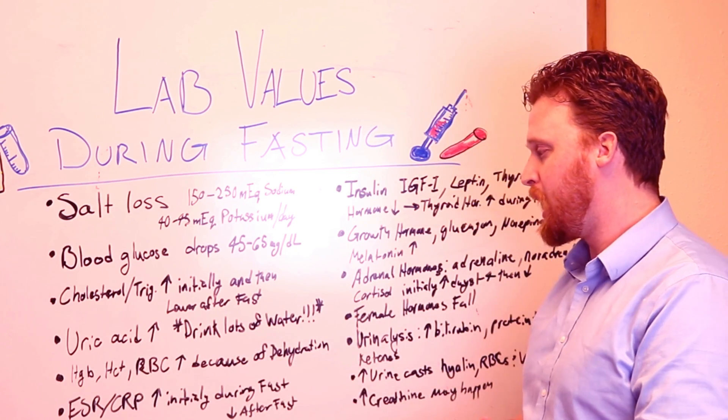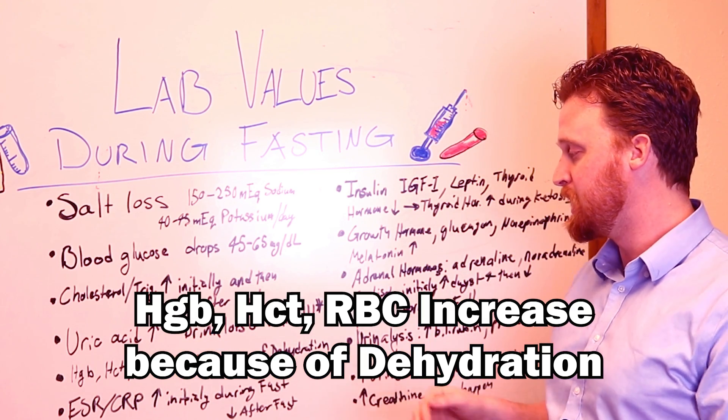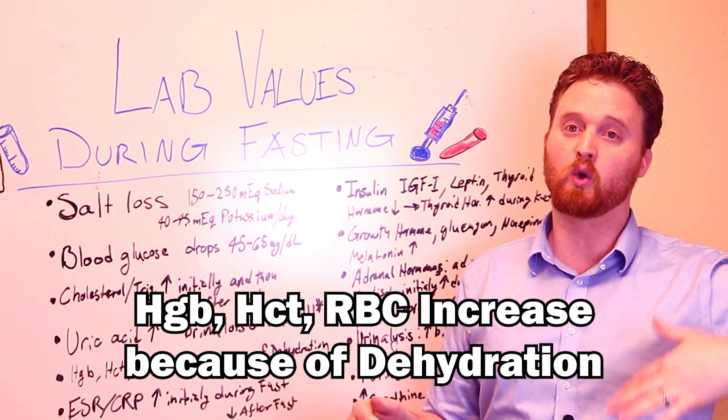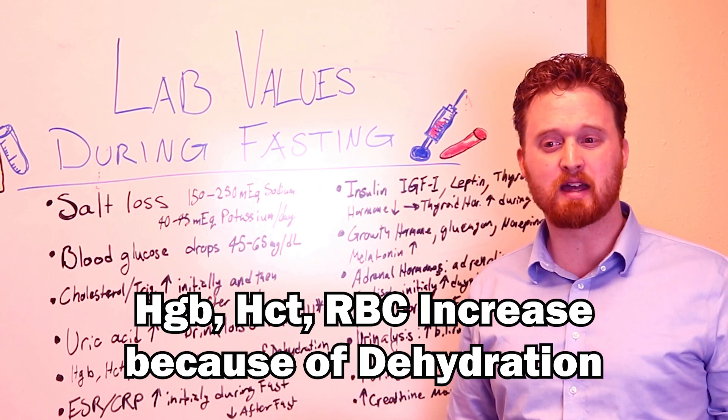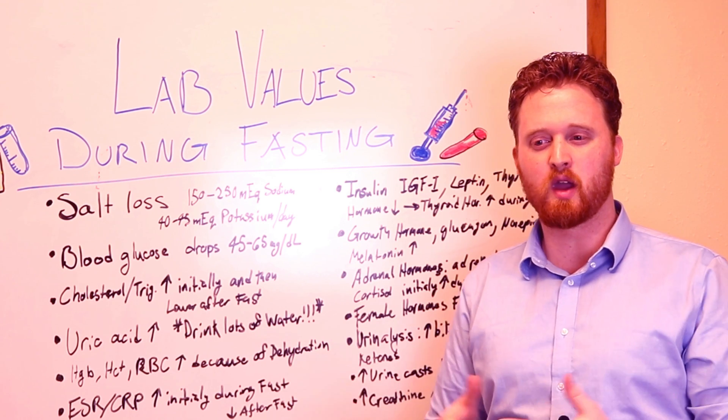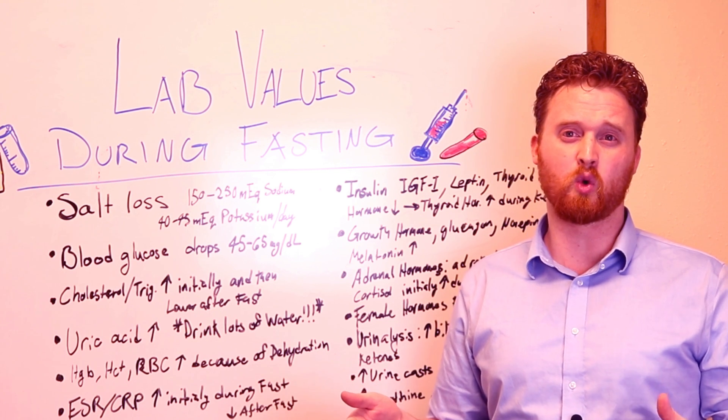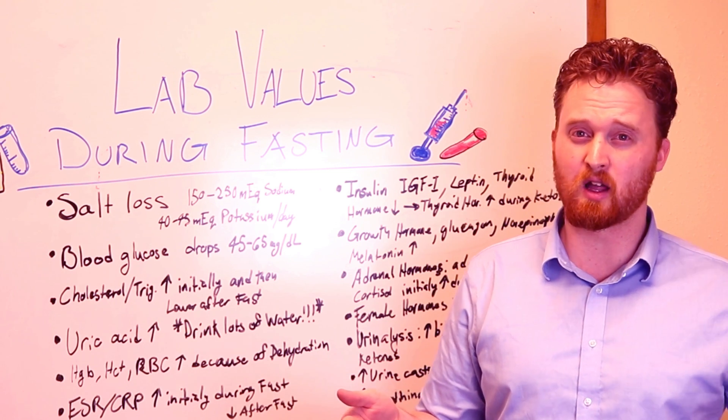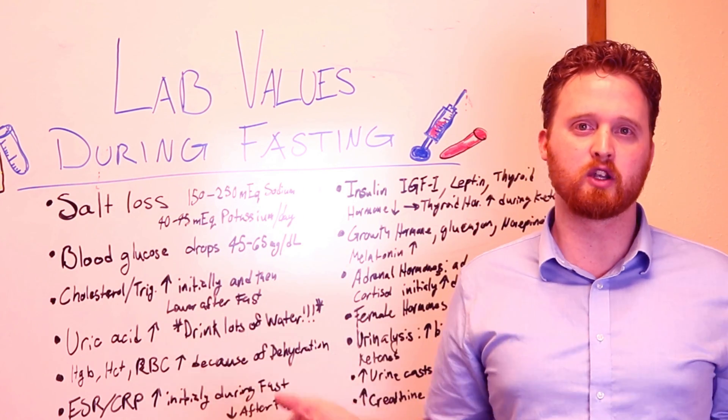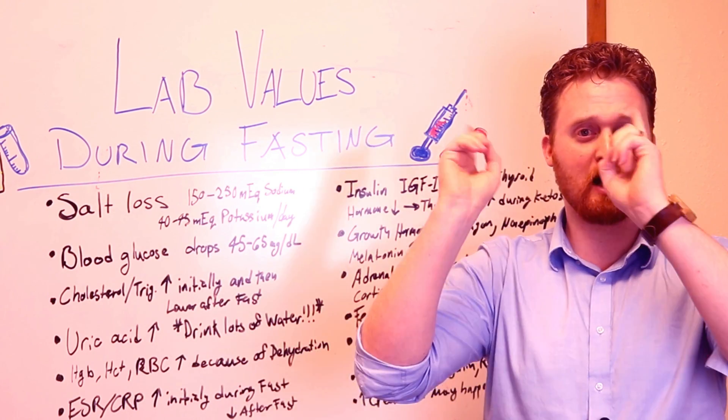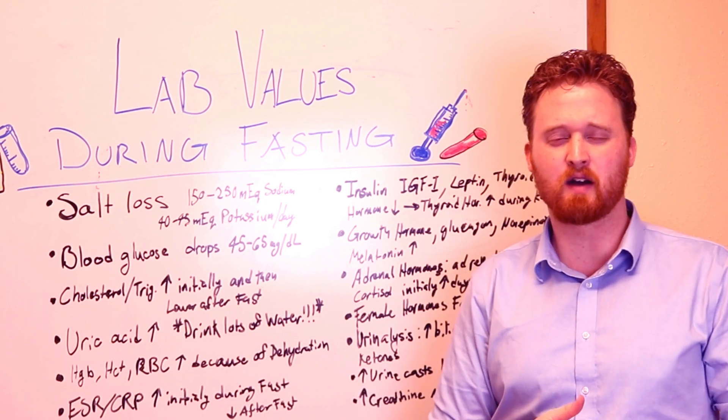The other things that do increase is hemoglobin and hematocrit and red blood cells do increase initially because of people who don't drink enough water while they're doing their fast. Obviously with dry fasting it is different. But when you should be doing water fasting, you do lose about 30% of your water intake because you get 30% a lot from our food. So making sure you're getting plenty of water. I have talked about how much water you should be drinking and I'll leave a link here to check that out.